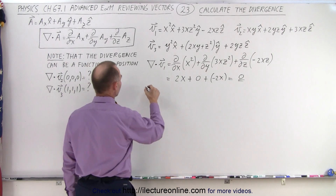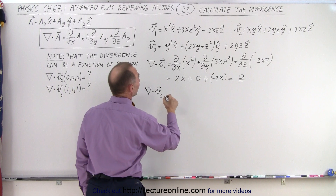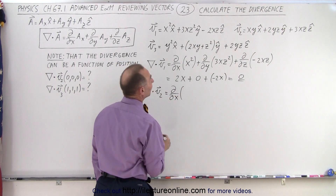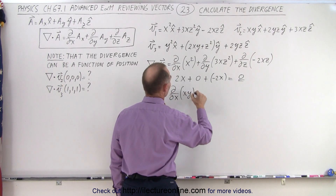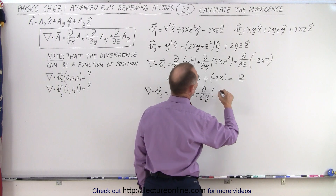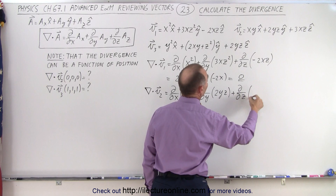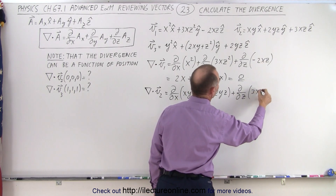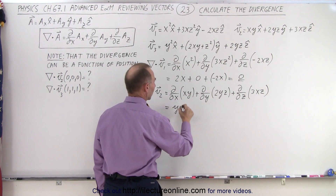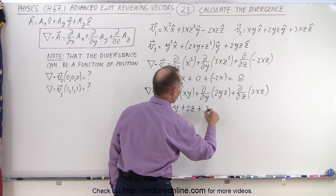How about vector field number 2? We're trying to find the divergence of vector field number 2, which is equal to the partial derivative with respect to x of xy, plus the partial derivative with respect to y of 2yz, plus the partial derivative with respect to z of 3xz. That gives us y, plus 2z, plus 3x.